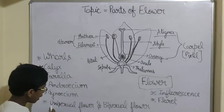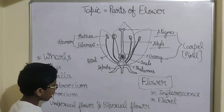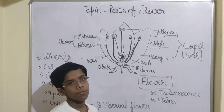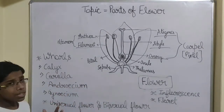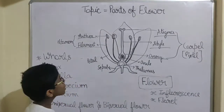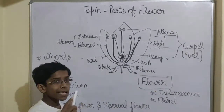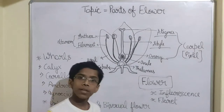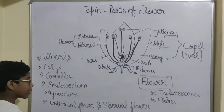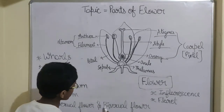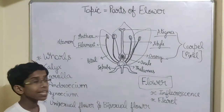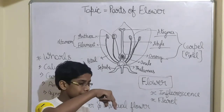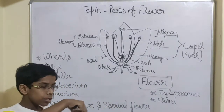Now we are going to discuss about unisexual flower and bisexual flower. Not all flowers have all four whorls. But calyx and corolla are in all flowers — they are in unisexual flowers as well as bisexual flowers. In all flowers you can see calyx and corolla, like the green-like thing you can see on the brinjal at the top.